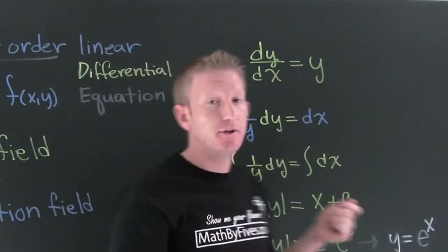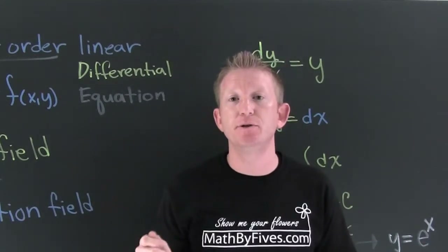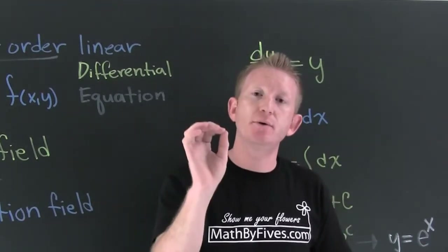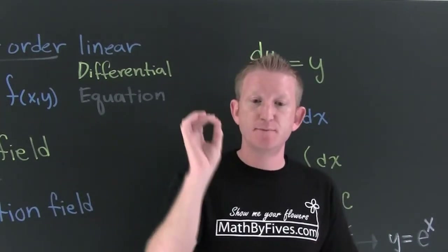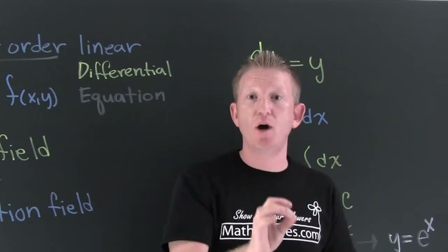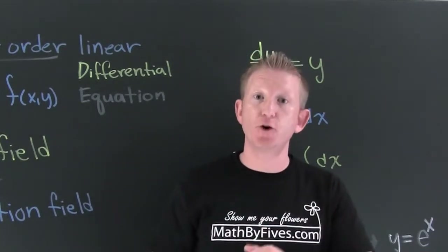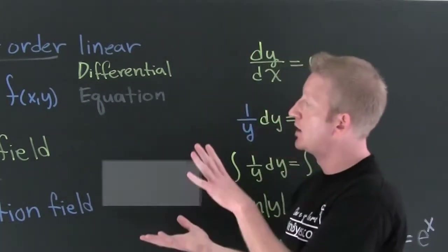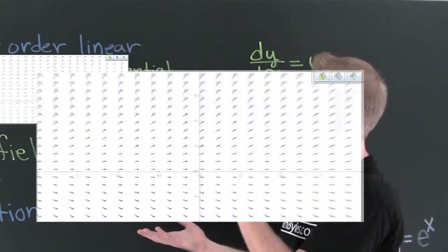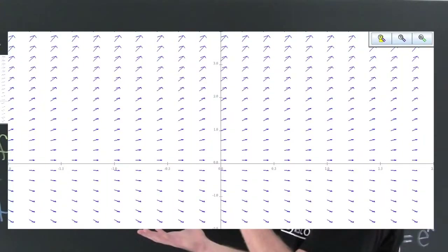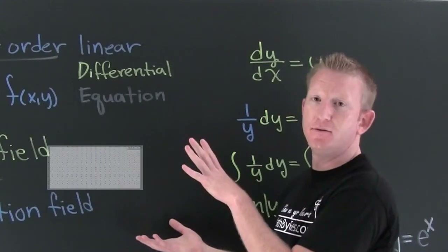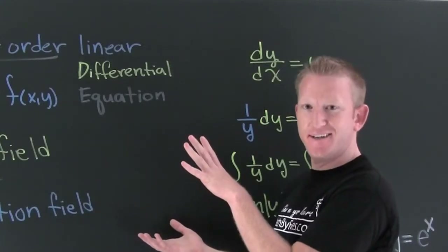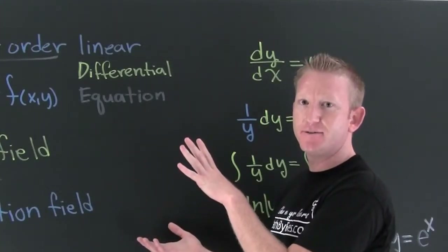Let's let the computer make a graph of this. What is the computer doing? It's going through and plotting specific x and y values, finding out what the slope is at those points. This is a graph of that slope field.